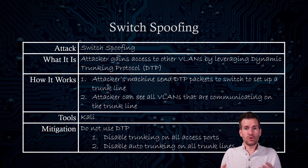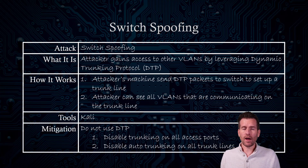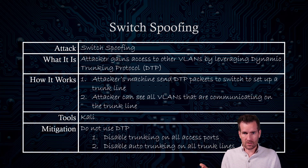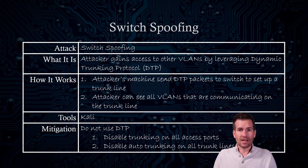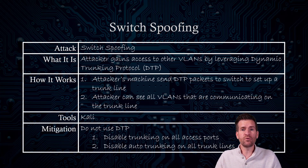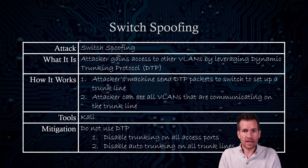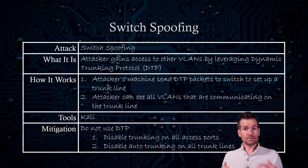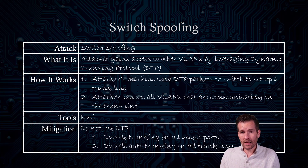One thing that manufacturers will do on your switches is set up the switch to use dynamic trunking protocol. This way, when you connect two switches together, they can communicate all their VLANs from one switch to the other, which speeds up configuration. But dynamic trunking protocol can be leveraged to an attacker's advantage. They can connect into a switch and pretend to be another switch, sending out DTP messages to get access to all the VLANs. There are tools on Kali Linux that attackers can use to leverage this.